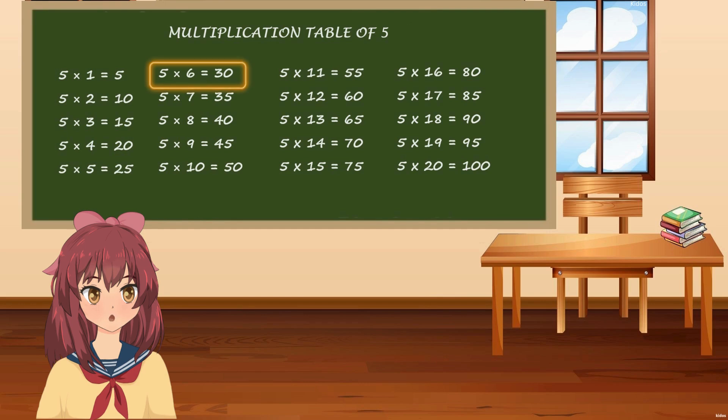5 times 6 is 30, 5 times 7 is 35, 5 times 8 is 40, 5 times 9 is 45, 5 times 10 is 50.